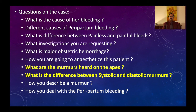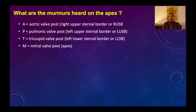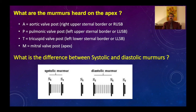Regarding cardiac murmurs: apical murmurs arise from the mitral and tricuspid valves. Aortic valve murmurs are heard at the right upper sternal border, pulmonary valve murmurs at the left upper sternal border, tricuspid at the left lower sternal border, and mitral murmurs are heard only at the apex. Systolic murmurs occur between the first and second heart sounds; diastolic murmurs occur between the second heart sound and the next first heart sound.